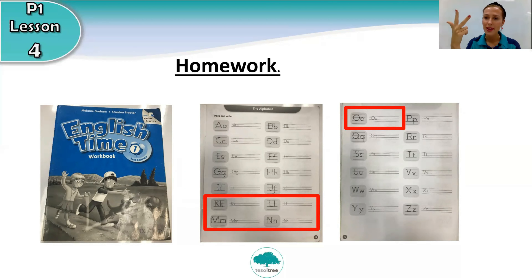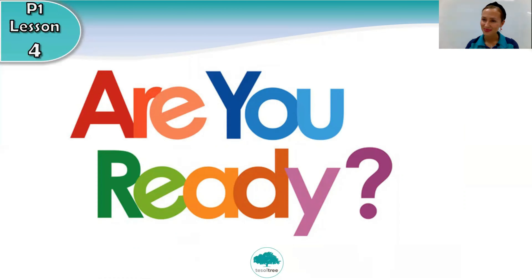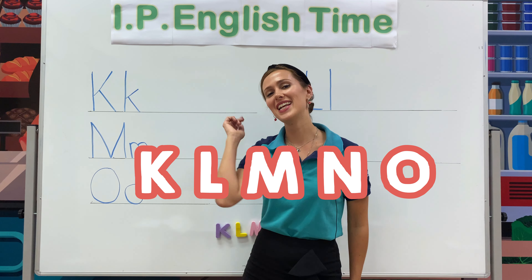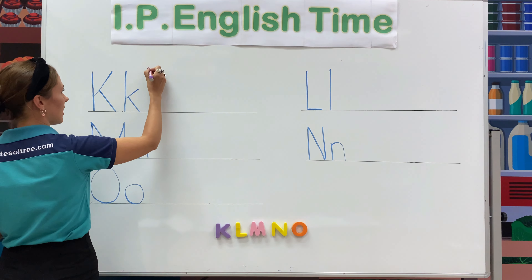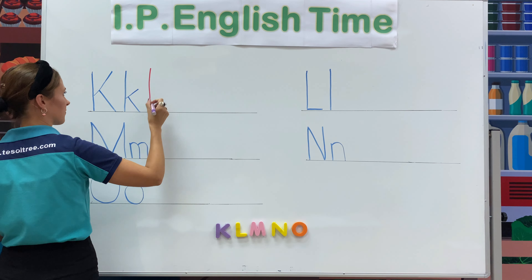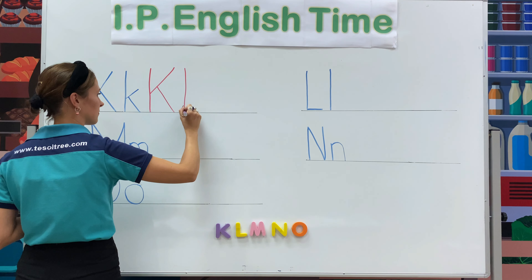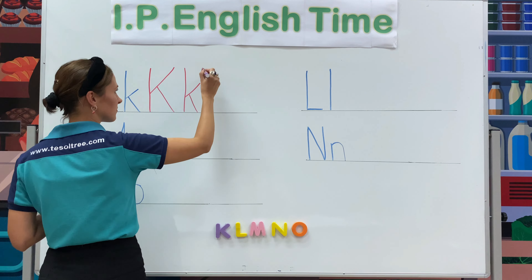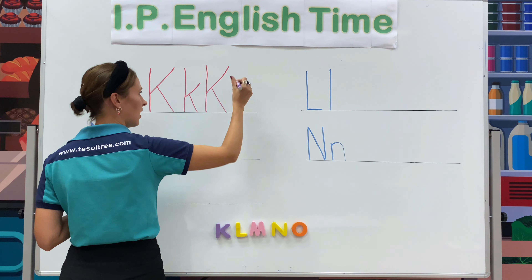P1, are you ready? Let's write. We are going to start with the capital letter K and small letter K. I want you to write two times. Capital letter K and small letter K.